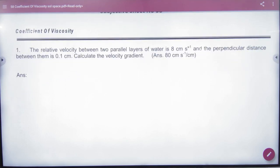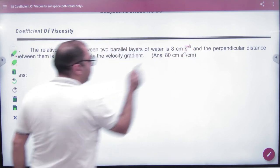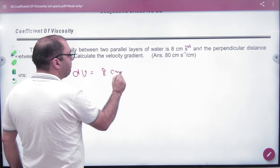Relative velocity between two parallel layers of water is 8 cm per second. So what is given? Relative velocity is 8 cm per second.